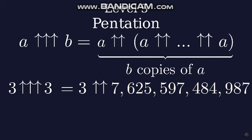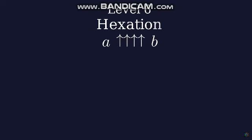And so 3 pentation this number is a power tower of 3s of height more than 7 trillion. This number is unimaginably massive. But we can go a little higher. With 4 arrows, we can denote hexation. Hexation is repeated pentation.